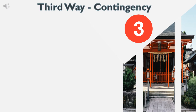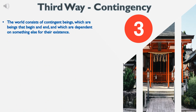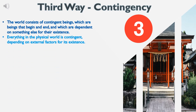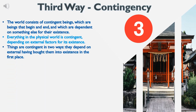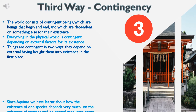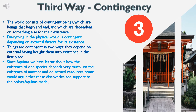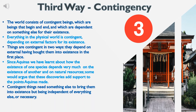Third Way: Contingency. The world consists of contingent beings, which are beings that begin and end and are dependent on something else for their existence. Everything in the physical world is contingent, depending on external factors for its existence. Things are contingent in two ways: they depend on external factors having brought them into existence in the first place. Since Aquinas, we have learnt how the existence of one species depends on the existence of another and on natural resources. Contingent things need something else to bring them into existence — something independent of everything else, or necessary.